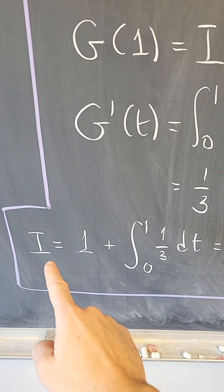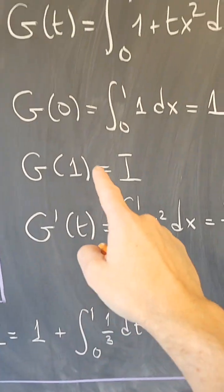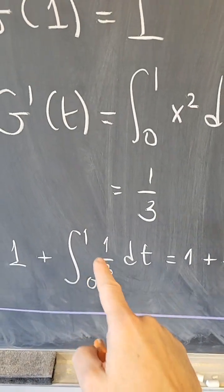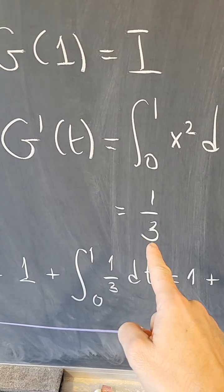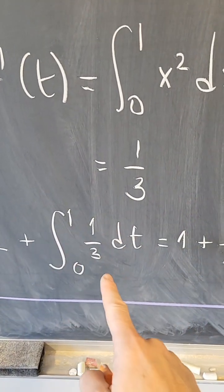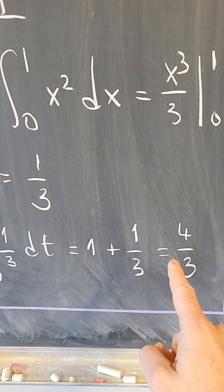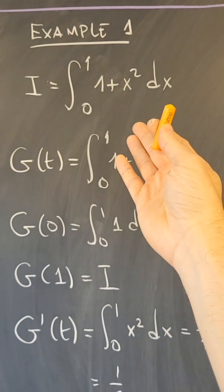Therefore, the trick tells me that the value of the integral will be 1, g of 0, plus the integral from 0 to 1 of 1 third of g prime t dt. That is also easy to do. That's just 1 plus a third, so that's 4 thirds, which is the value of that integral.